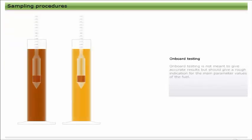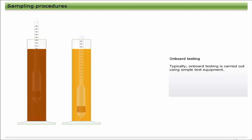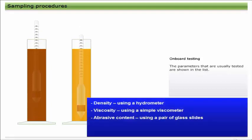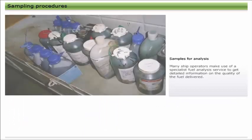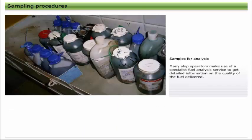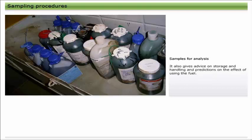Onboard testing is not meant to give accurate results but should give a rough indication for the main parameter values of the fuel, using simple test equipment. The results from these tests will give an early indication if using the fuel is likely to cause any operational problems. Many ship operators make use of a specialist fuel analysis service to get detailed information on the quality of the fuel delivered. The major classification societies offer this service and supply the containers, labels, and instructions for taking and forwarding the samples. The analysis report covers the fuel properties and contaminant content, and also gives advice on storage and handling and predictions on the effect of using the fuel. It is also good practice to carry out onboard testing as a check on the accuracy of the shoreside analysis report.